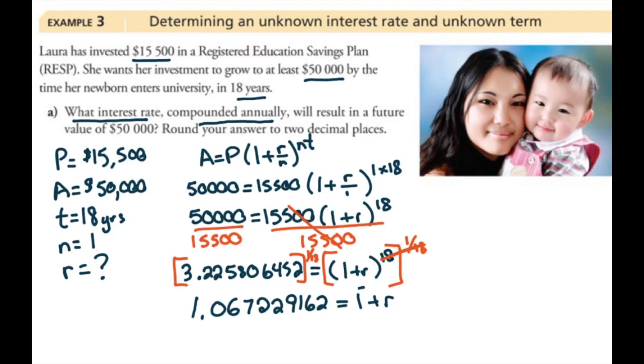Last step to solve for r. We'll subtract 1 from both sides. And we get that r equals 0.067229162. But as interest rates are always referred to in percents, we'll say that this is 6.72% is what she would need to meet her goal.